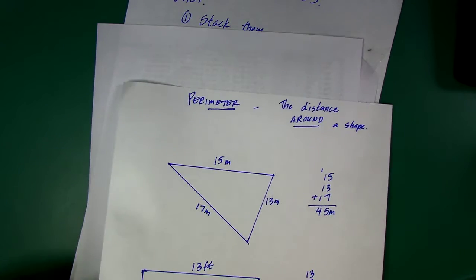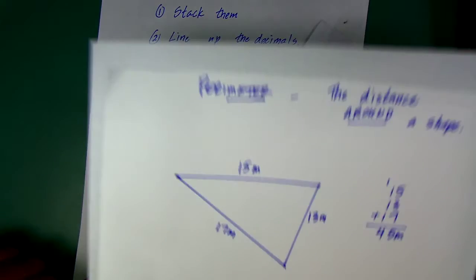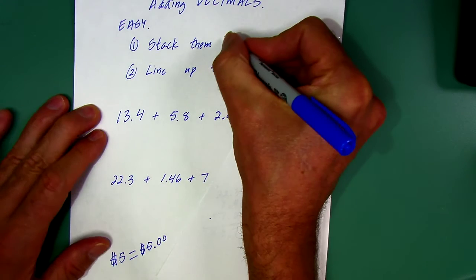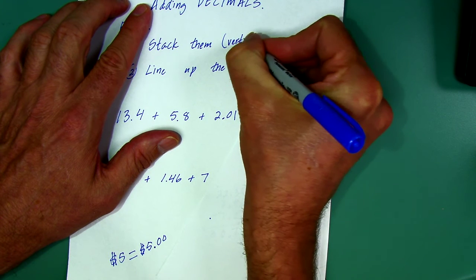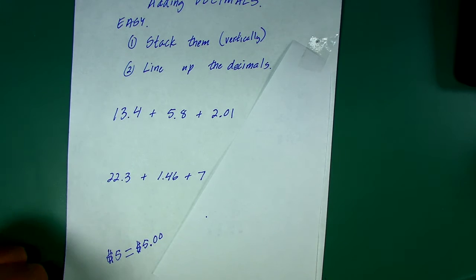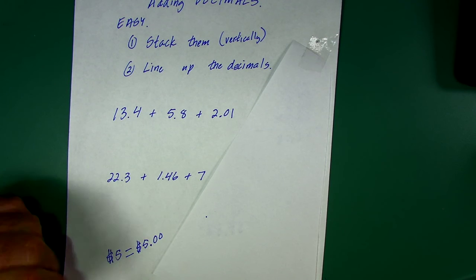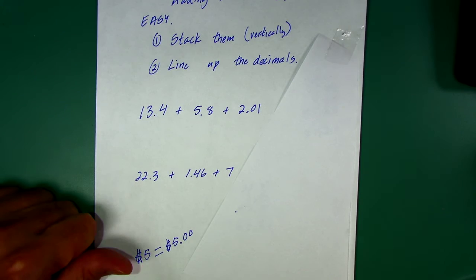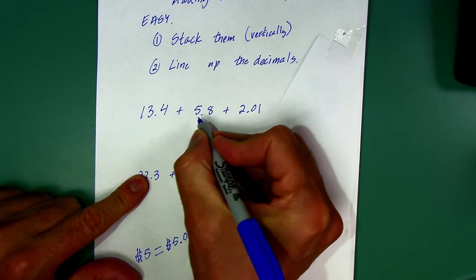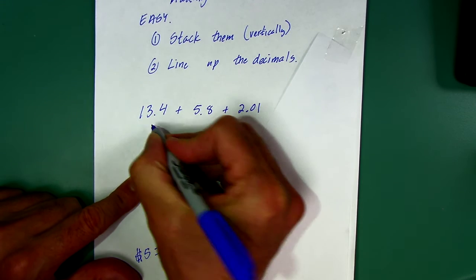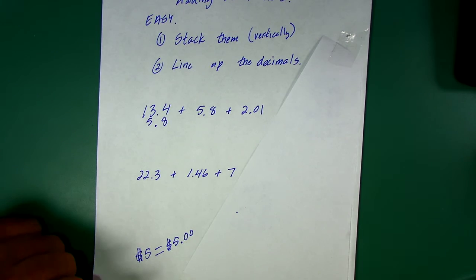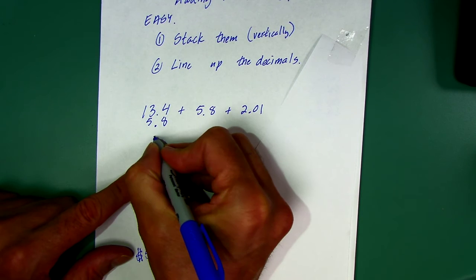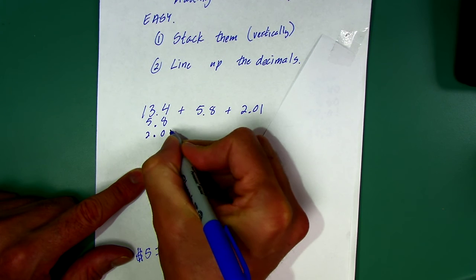To be able to do tonight's homework, you also need to be able to add some decimals. It's easy to add decimals. Just remember these two things: Stack them vertically, up and down, and you got to line up the decimals. Don't just stack them without lining up the decimals. So if I got 13.4 and 5.8, I'm going to put the decimal right underneath the other decimal.